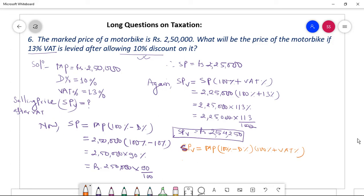We have to find SPV. What is MP? 2 lakhs 50,000 times (100 minus D percent is 100 percent minus 10 percent) times (100 percent plus 13 percent). 100 percent equal to 2,50,000 times 90 percent, this is 113 percent, equal to 2,50,000 times 90 by 100 times 113 by 100.